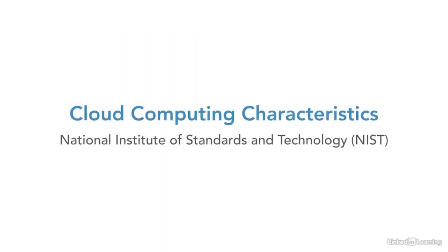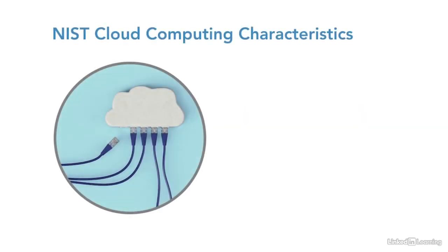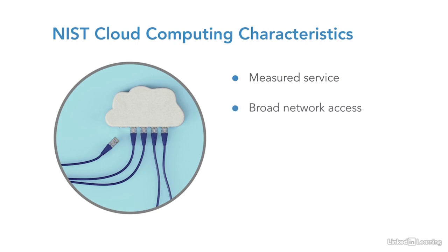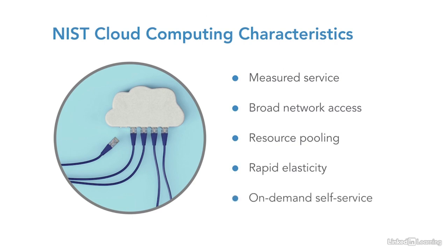Cloud computing presents IT services over a network, and those IT services run on somebody else's equipment — specifically the cloud service provider's equipment. This video focuses on identifying the NIST characteristics of cloud computing, where NIST stands for the National Institute of Standards and Technology. We're going to apply a security twist as we talk about these characteristics: measured service, broad network access, resource pooling, rapid elasticity, and on-demand self-service.